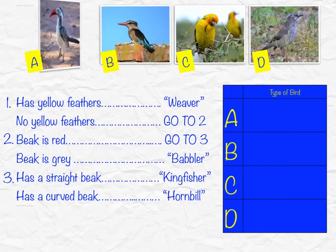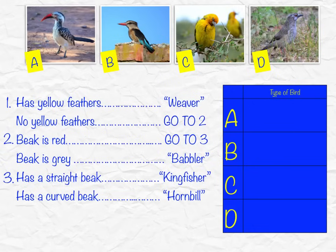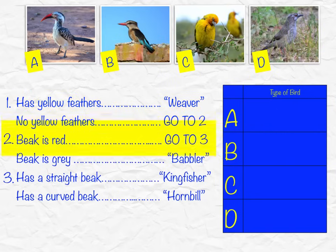Let's start by trying to identify organism A. We start at part one and we say: does it have yellow feathers or no yellow feathers? If it has yellow feathers, we can see that it's called a weaver. In this case that's not true, so we say no yellow feathers and go to part two. Part two states the beak is red — if it is, we go to three; if the beak is gray, we know it's called a babbler.